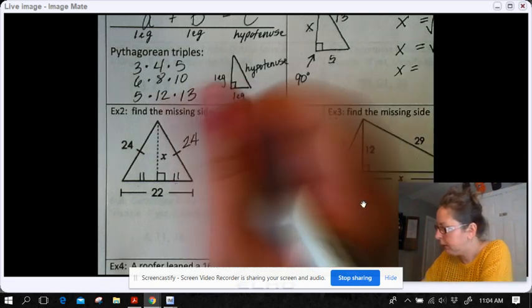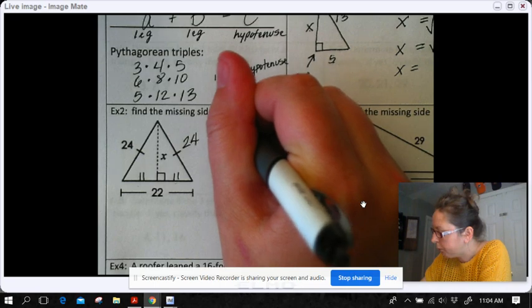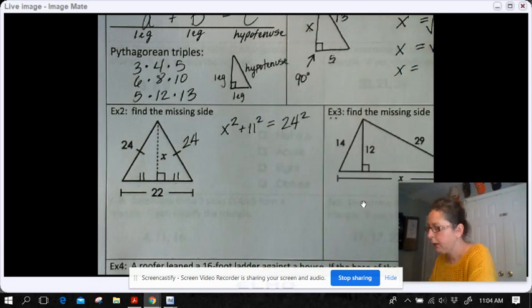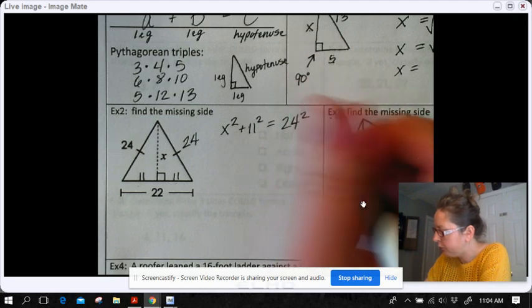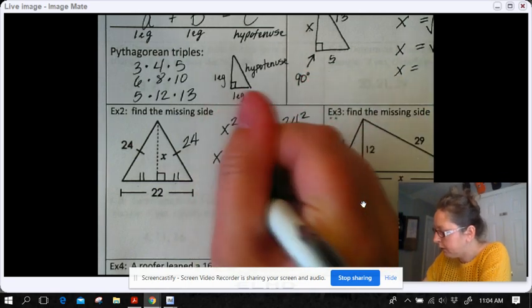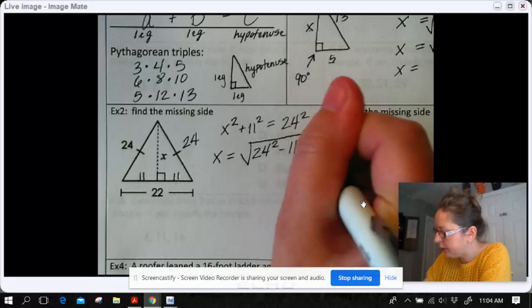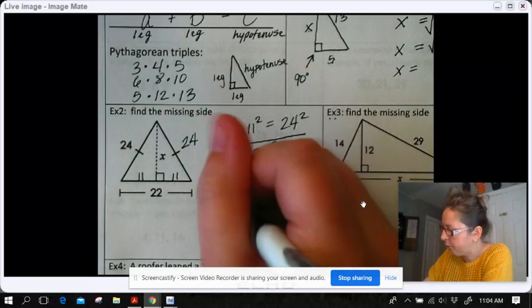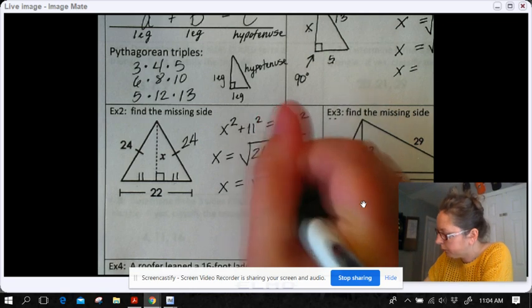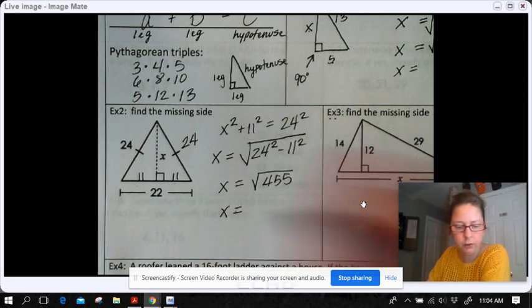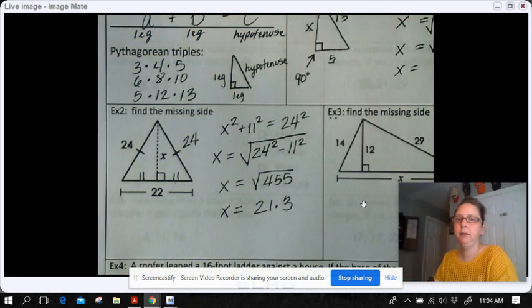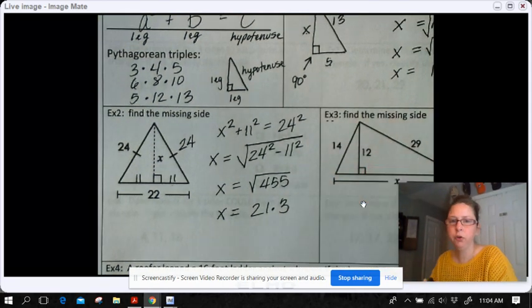Now I have a leg and I have hypotenuse and I need to find the missing leg. So let's do x squared plus 11 squared equals 24 squared. And I'm just going to go ahead and subtract the 11 squared from both sides. And to get the x by itself, I need to square root this. And if you simplify this, it will be the square root of 455, which in your graphing calculator comes out to be 21.3.